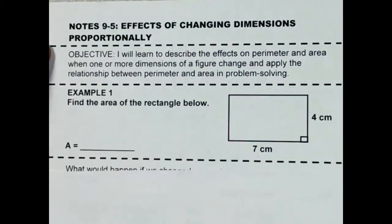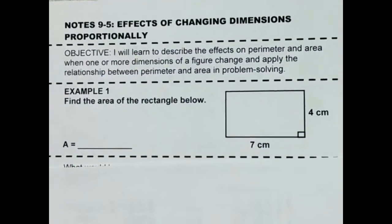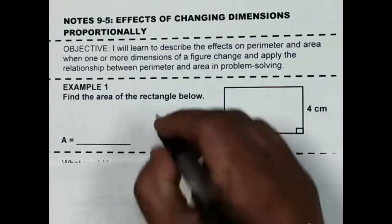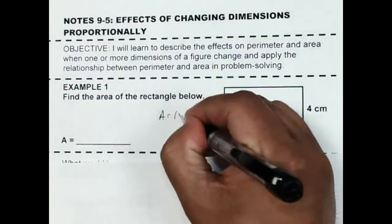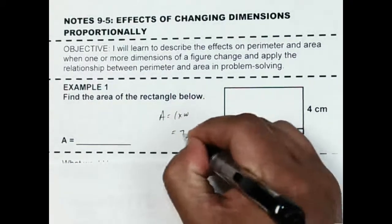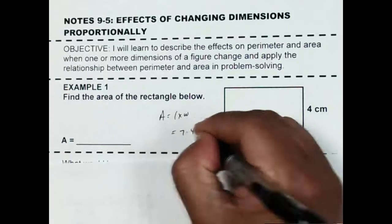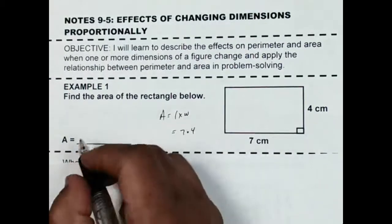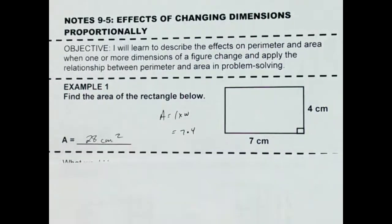We're going to start by looking at a basic rectangle that's 4 by 7. The area is going to be length times width, which is 7 times 4, which comes out to be 28 centimeters squared.